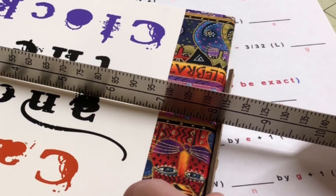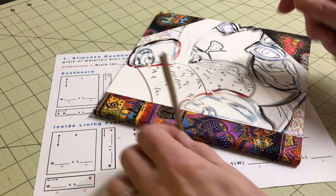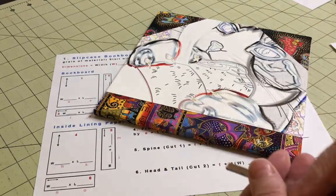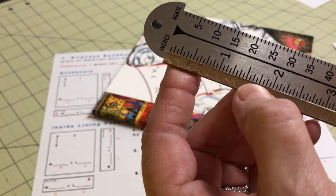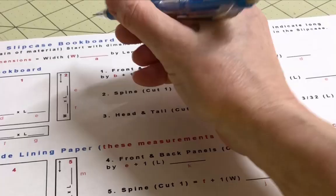You can also use that piece of bookboard to get an accurate measurement of the depth of the book. Just make a mark where the book hits the piece of bookboard and then measure that mark. So once you have these three important measurements, fill in the width, length, and depth blanks on your worksheet. These are the numbers that everything else will be based off of.